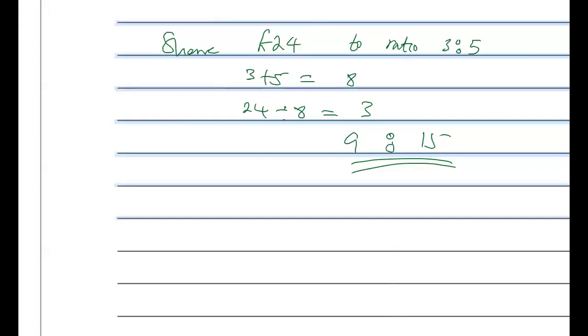Now share 24 pounds in ratio three to five. Add them together: three plus five is eight. 24 divided by eight gives you three. So three times three is nine, and three times five is fifteen. That's the answer.